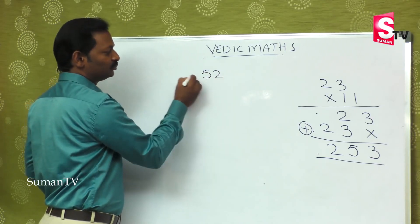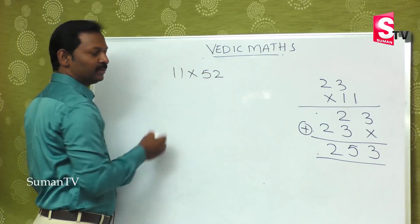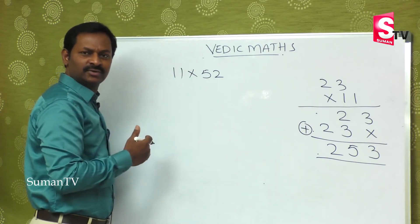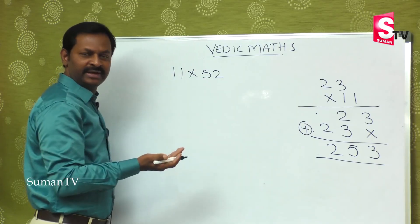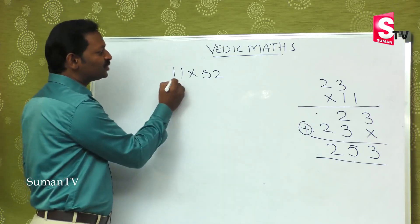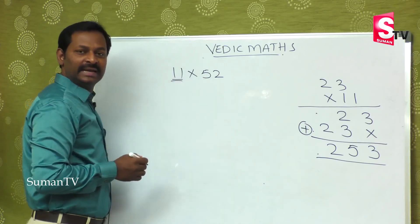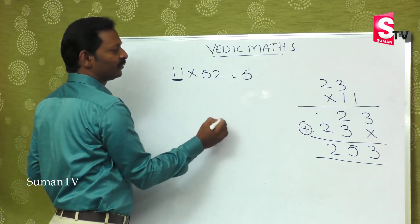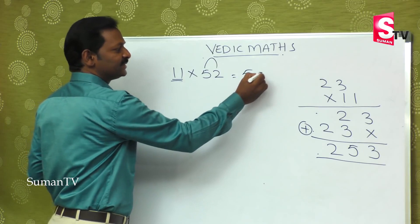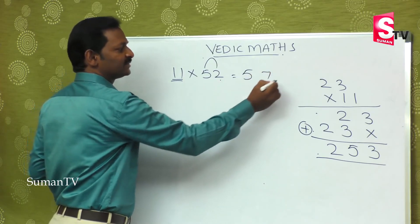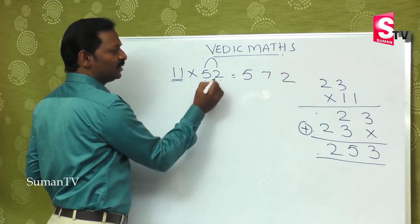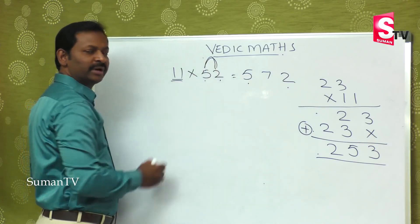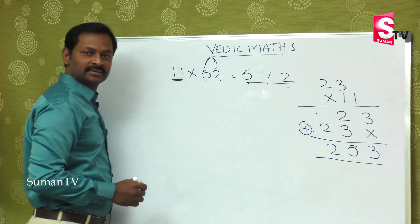Suppose 52 is multiplied by 11. This number is multiplying with 11. The answer: first number is 5, then add 5+2=7, put 7 in the middle, and the last number is 2. So first and last numbers remain the same, and you add these two numbers and put them in the middle. The final answer is 572.